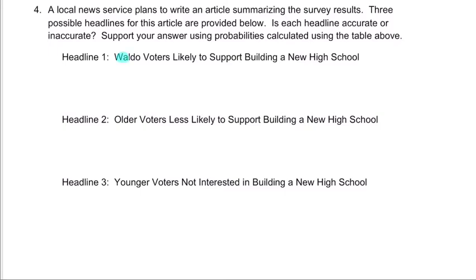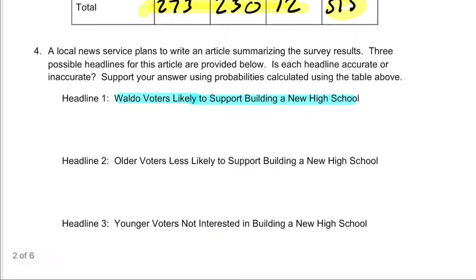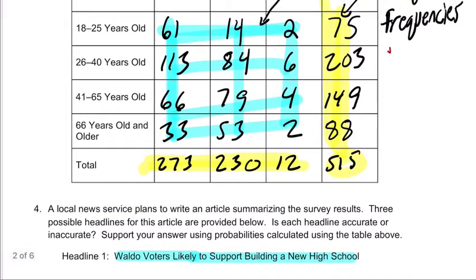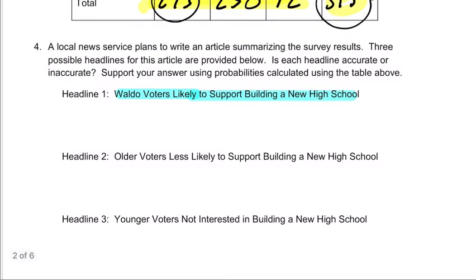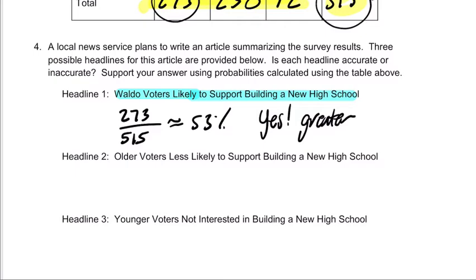The first one says, Waldo voters likely to support building a new high school. All right. Well, I'd say yes. If you look down here at our first marginal frequency here, 273, that's all the yeses out of 515 people. Okay. So I'm going to write 273 over 515. That's about 53%. I'd say, yes, it's greater, right? It's greater than 50%. So it works.